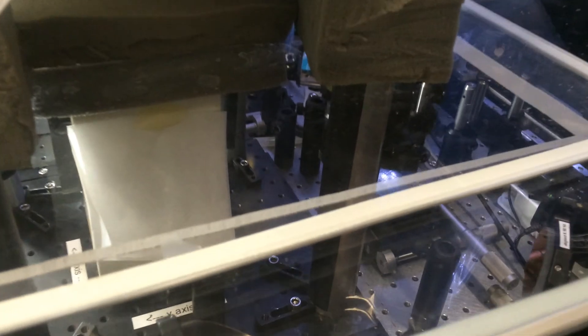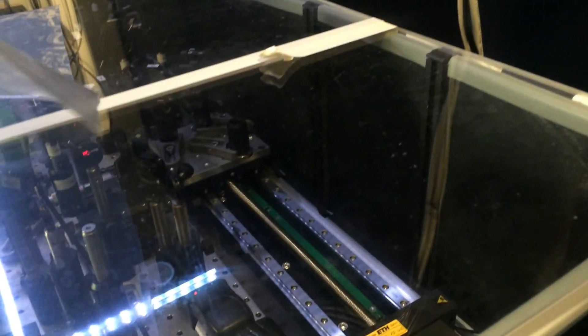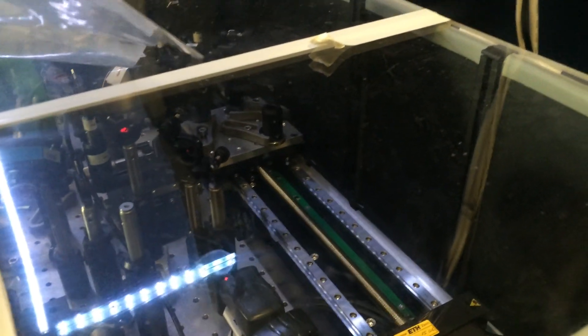What I'm proud of is actually this cryostat that has four windows. Here, this parabolic mirror is on a flip mount so that I can flip out and then go in transmission, or if I flip in, I can do reflection geometry. And that's why I have such a long stage, actually, to be able to find the time overlap again.